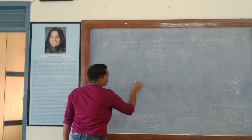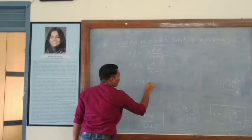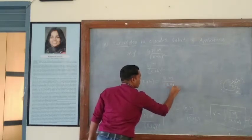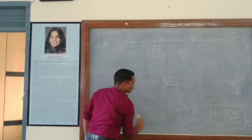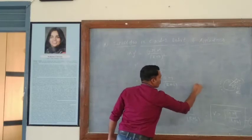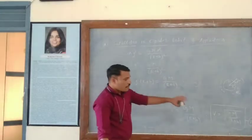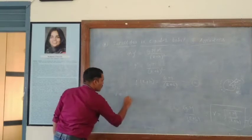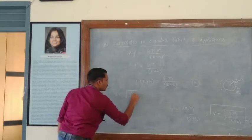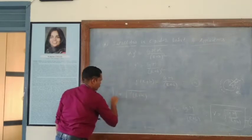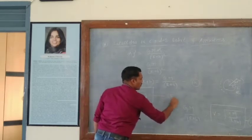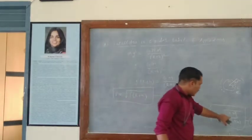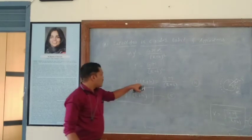Now we can also write: g-dash times (R plus H) equals G times M upon (R plus H). From equations 3 and 4, we can write v equal to square root of g-dash times (R plus H). This is equation 5. We have simply replaced G times M upon (R plus H) with g-dash times (R plus H), where g-dash is the acceleration due to gravity at height H.